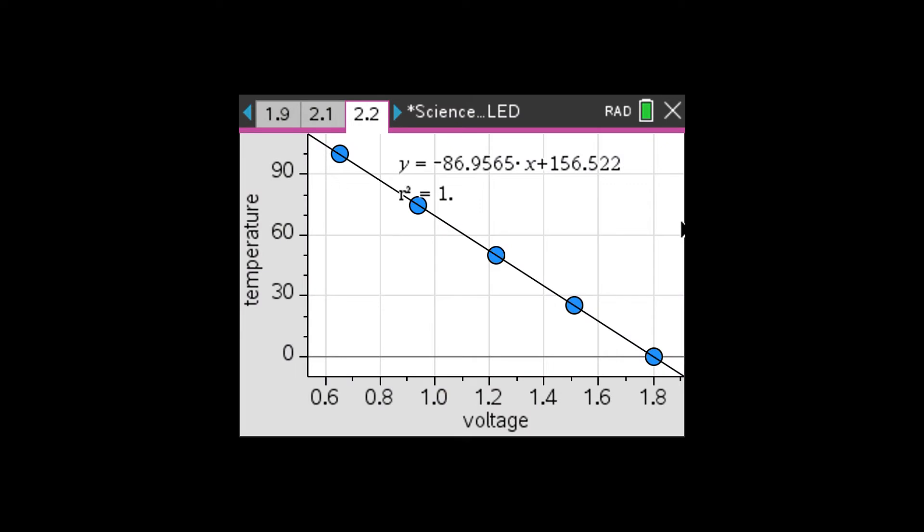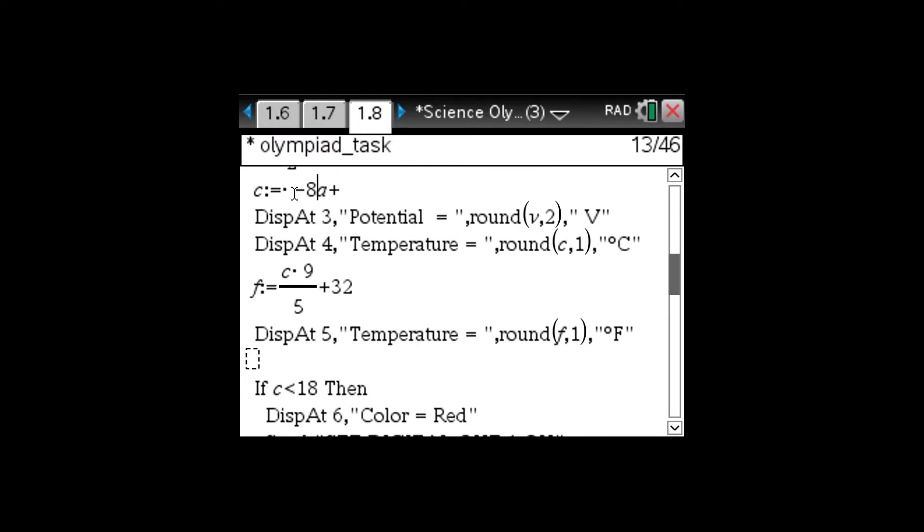Finally, modify your previous test program by adding your calibration equation to your code. The voltage measured becomes the input value X of the Y equals MX plus B calibration equation, and the output Y is the temperature.